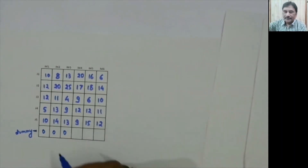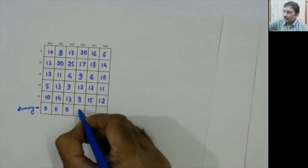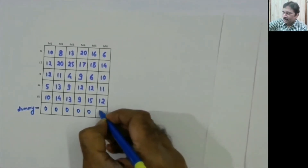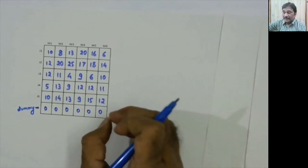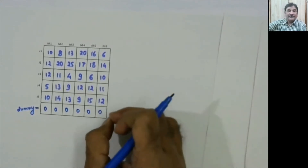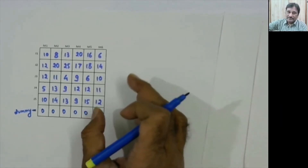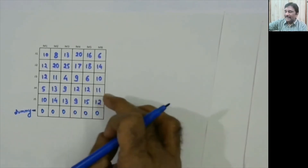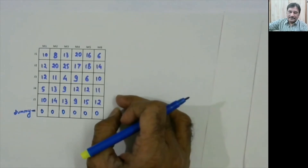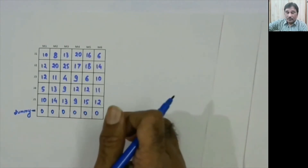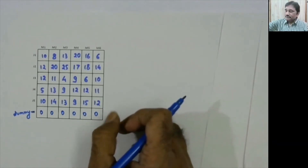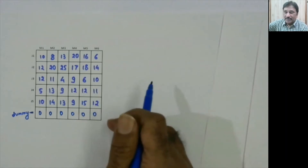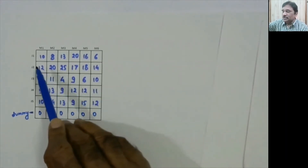Continuing row reduction: from the second row subtract 12 (minimum), giving 0, 8, 13, 5, 6, 2. From the third row subtract 4, giving 8, 7, 0, 5, 2, 6. From the fourth row subtract 5, giving 0, 0, 8, 4, 8, 8. From the fifth row subtract 9, giving 1, 5, 4, 0, 6, 3. The sixth row (dummy) has minimum 0, so no change. This resulting matrix is called the Row Opportunity Cost Matrix (ROCM).